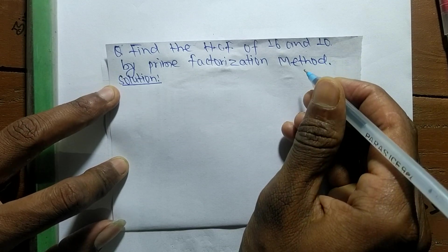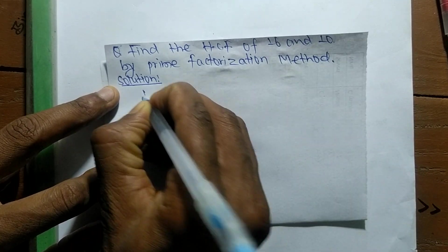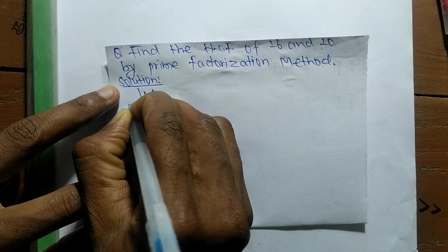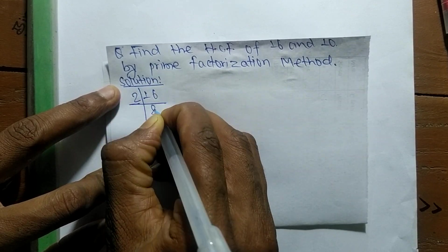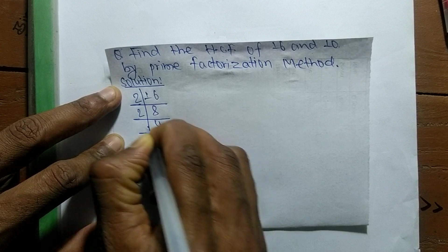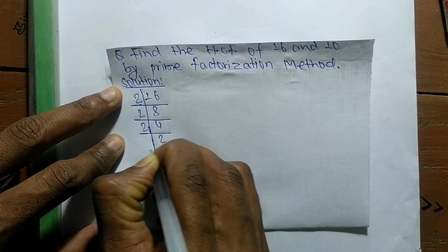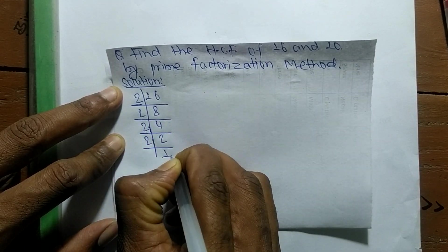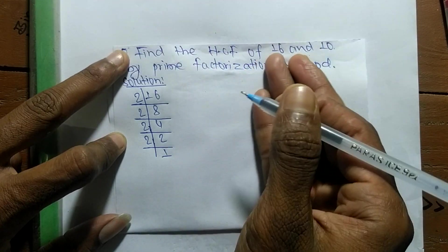First, we find the prime factors of 16. It is 2 times 8 equals 16, 2 times 4 equals 8, 2 times 2 equals 4, and 2 times 1 equals 2.